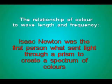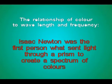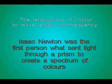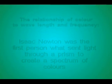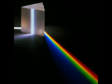Newton was the first person who got results for the experiment of seeing white light through a prism to create a spectrum of colors. If you shine this spectrum onto a white piece of paper, you will then see red, orange, blue and violet.